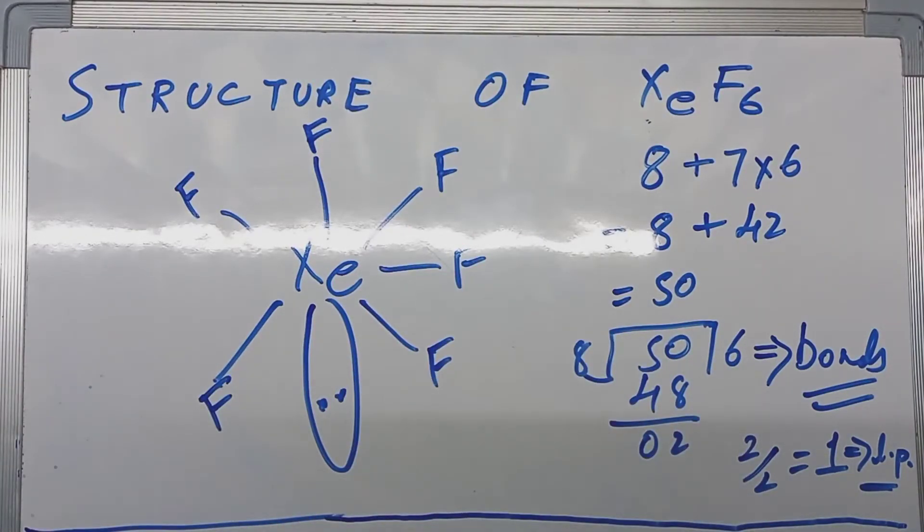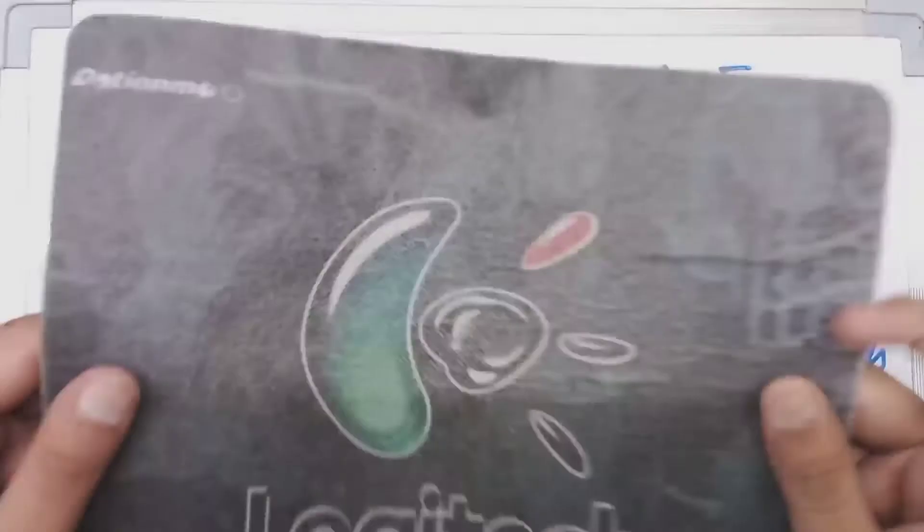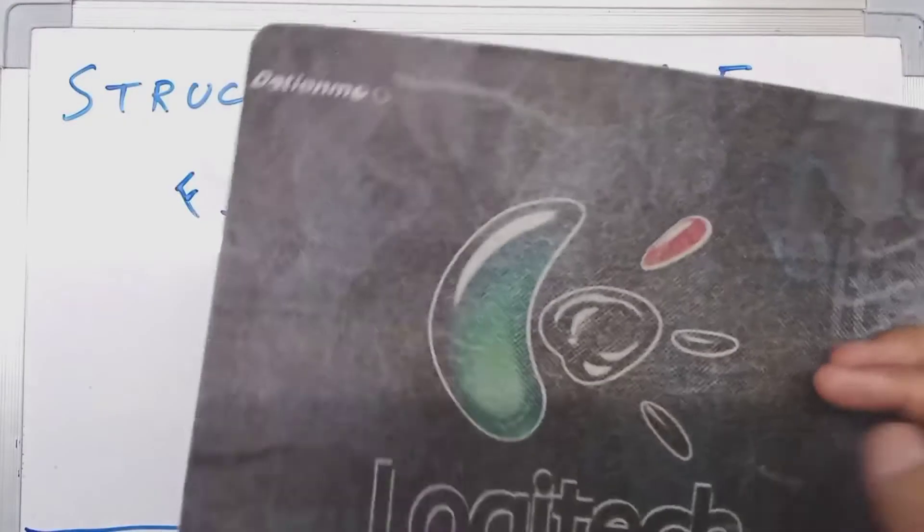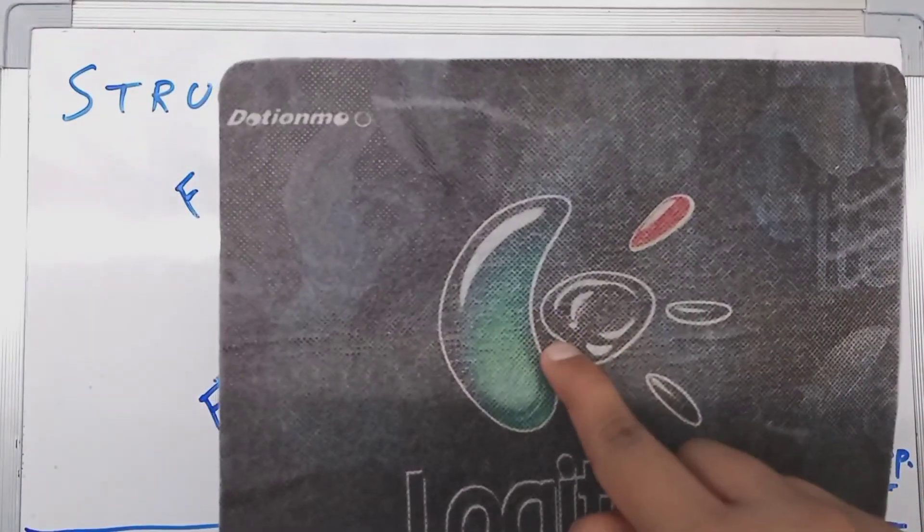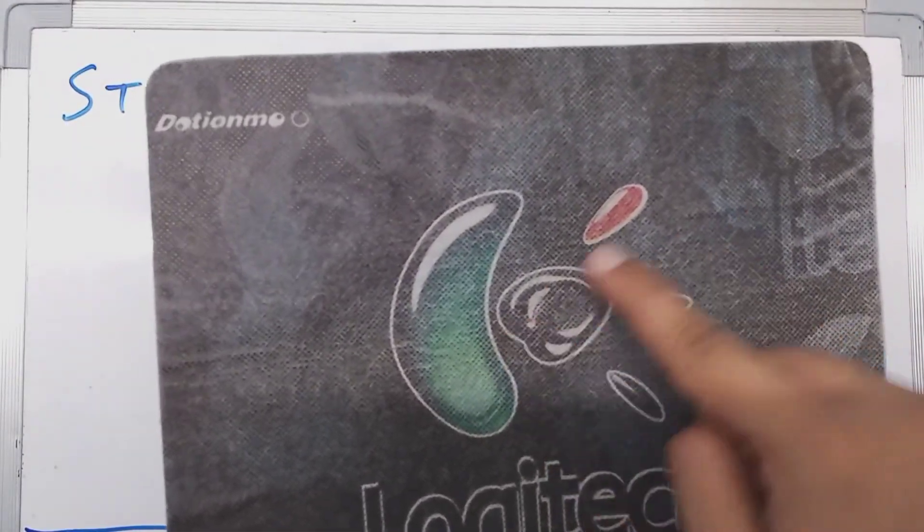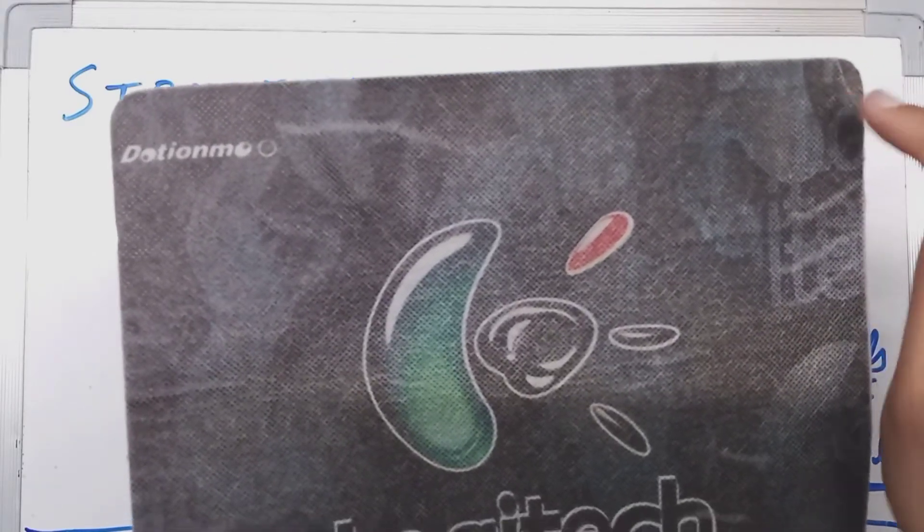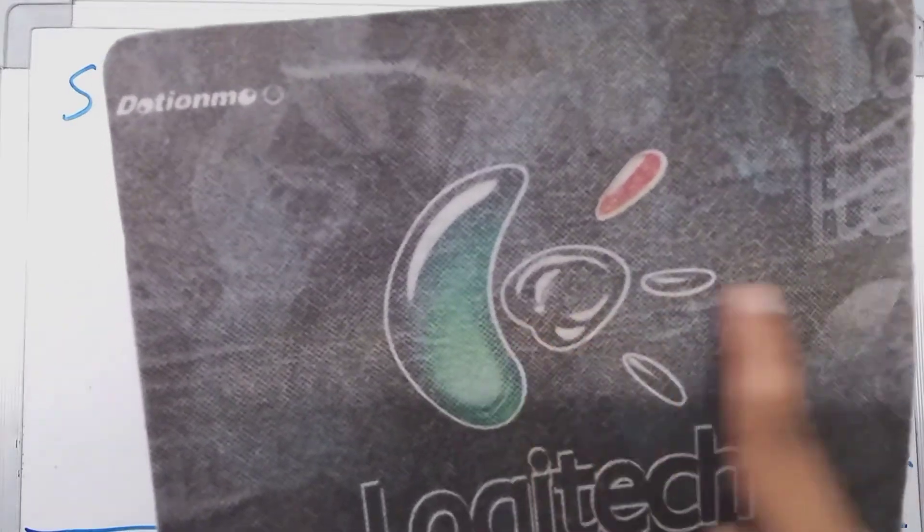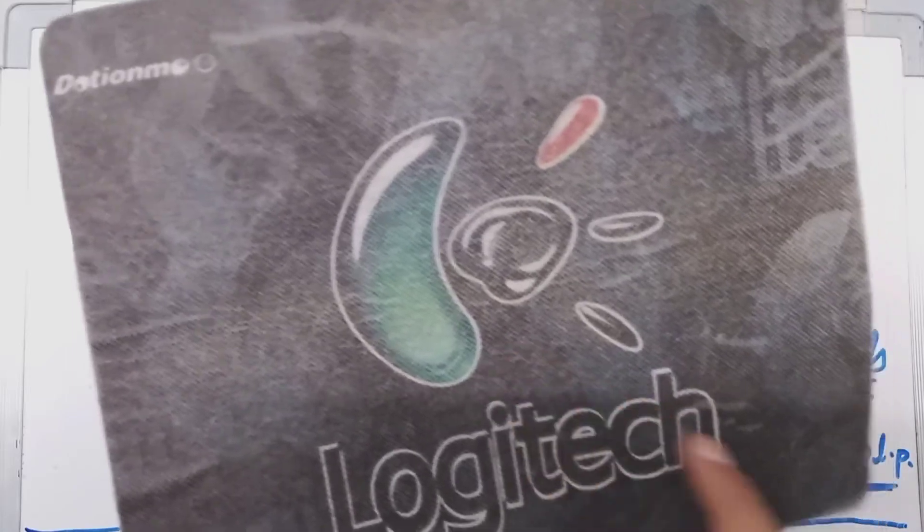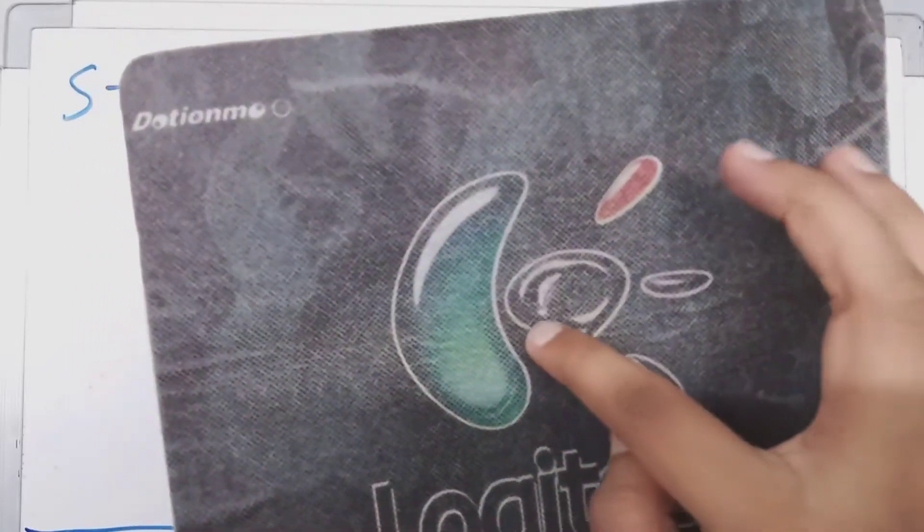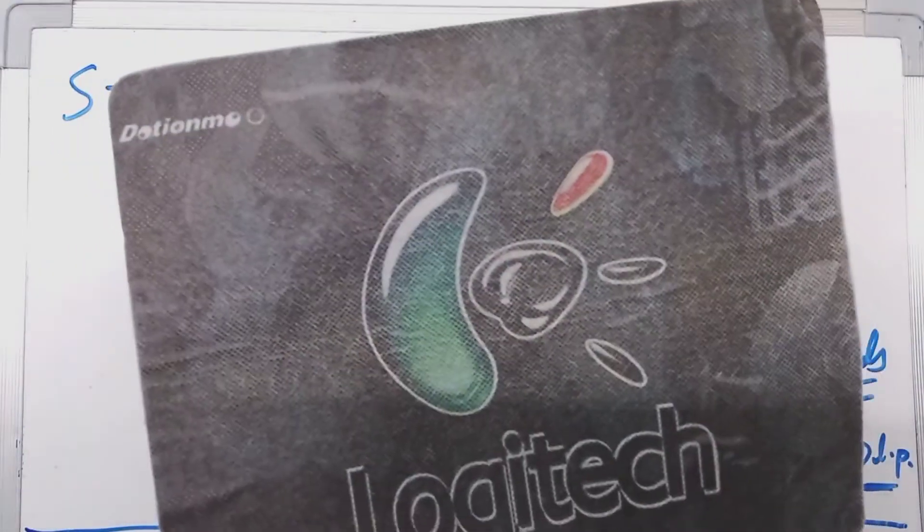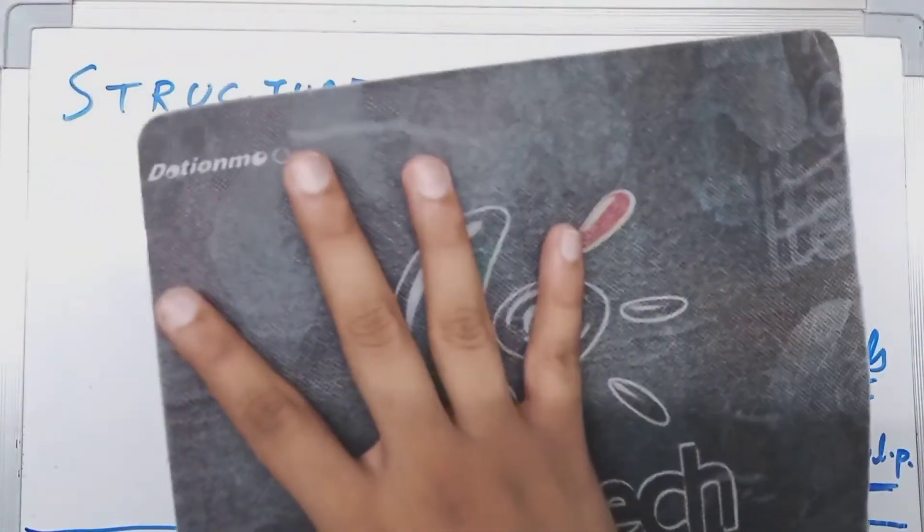For example, I am going to pick up this mousepad. This is a 2D mousepad. Here you have xenon, 1 XeF bond. You have fluorine. 1 XeF bond, 2 XeF bond, 3rd XeF bond, 4th XeF bond, 5th XeF bond. Now this all lies in a plane.